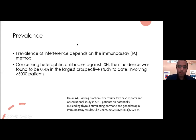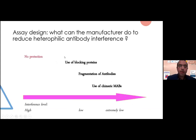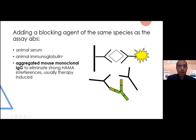The prevalence of interference depends on the immunoassay. In a study of 5,000 patients, the incidence of heterophilic antibodies against TSH was found to be 0.4% — not very common, but it exists. Manufacturers can reduce heterophilic antibody interference using blocking proteins, augmentation of antibodies, or chimeric antibodies. A key approach is using blocking immunoglobulins that block the action of heterophilic antibodies, leaving TSH free to be sandwiched by the capture and detection antibodies.